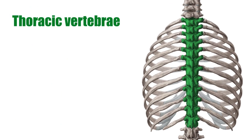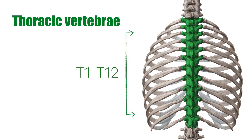There are 12 thoracic vertebrae, denoted as T1 to T12, found in adult humans, and they are situated in between the cervical and lumbar vertebrae, with a general sizing larger than the cervical but smaller than the lumbar vertebrae.